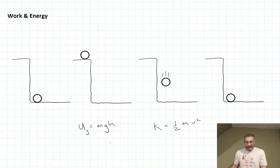So our object started out with gravitational potential energy. And as it fell, it lost some of its gravitational potential energy and it gained kinetic energy.